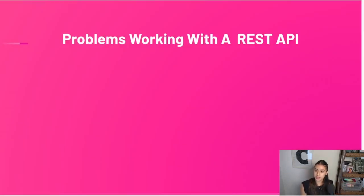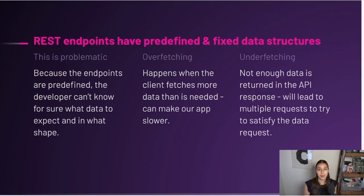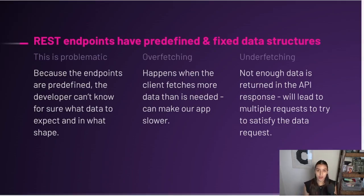REST endpoints are predefined and have fixed data structures. When we made those requests we got back arrays of objects with nested objects — all predefined. There's no way to say 'can you just send back a flat array' or 'can you send me an object instead of an array of objects.' We just have to take whatever we get. The endpoints are also predefined — the Spotify developers created them to suit their app's needs, not ours. Because we didn't create those endpoints, we have to depend on how they structured them to get what we want.